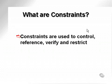What are constraints? How are they used? Constraints are used to control, reference, verify, and restrict. By restrict, we mean a value is allowed to only be certain values. By verify, we can check something. By reference, it means we cross-reference between different items.